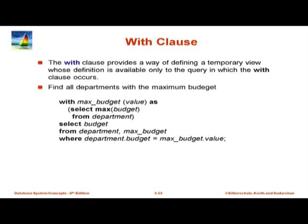Moving to a new topic: the WITH clause. The WITH clause is a variant of views — it is a way of defining a temporary view whose definition is available only to the query in which the WITH clause occurs. For example: WITH max_budget(value) AS (SELECT MAX(budget) FROM department), and then the main query does SELECT budget FROM department, max_budget WHERE department.budget = max_budget.value. This finds the department with the maximum budget.